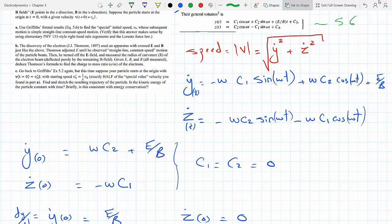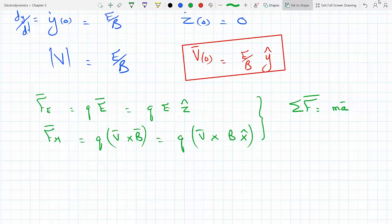Well, if you have a simple straight line constant speed motion, constant speed motion immediately eliminates the acceleration to zero. That means if the particle is under the effect of zero net force, it will continue to move in that initial velocity. When would that happen? When these two forces add up to zero. So they have to balance each other out.